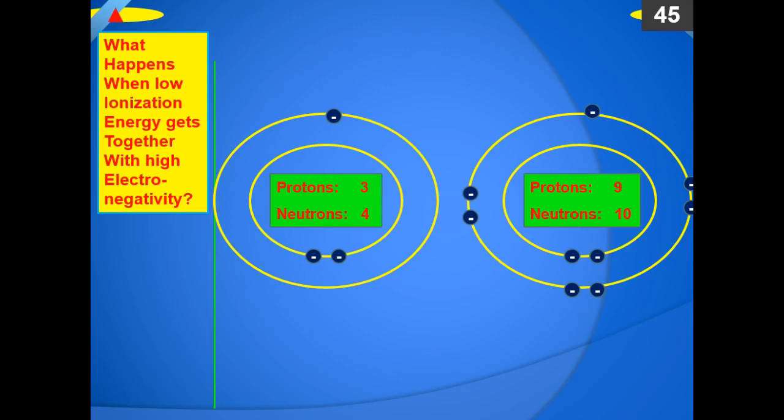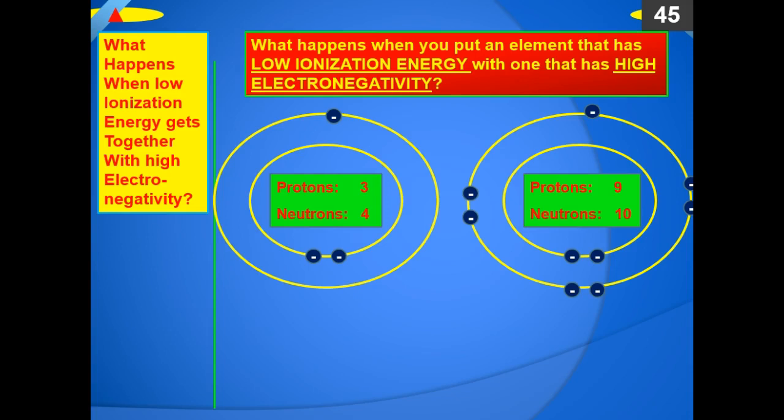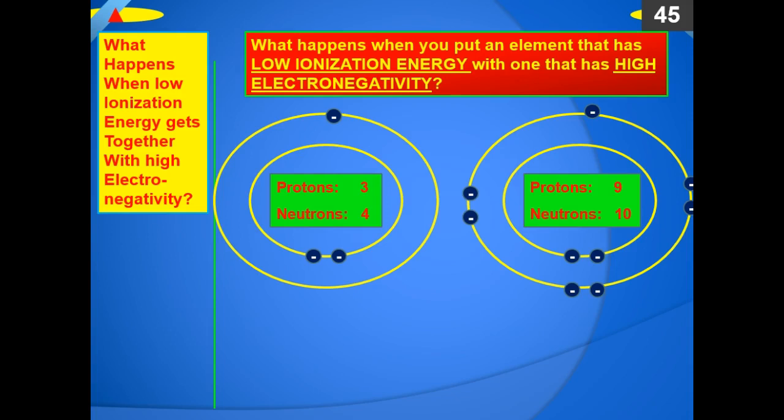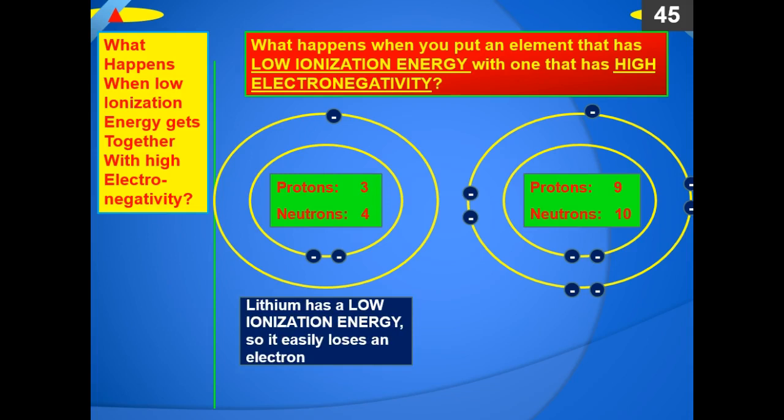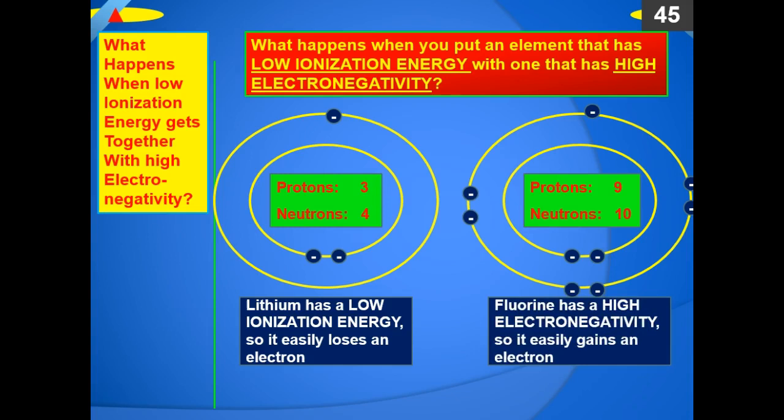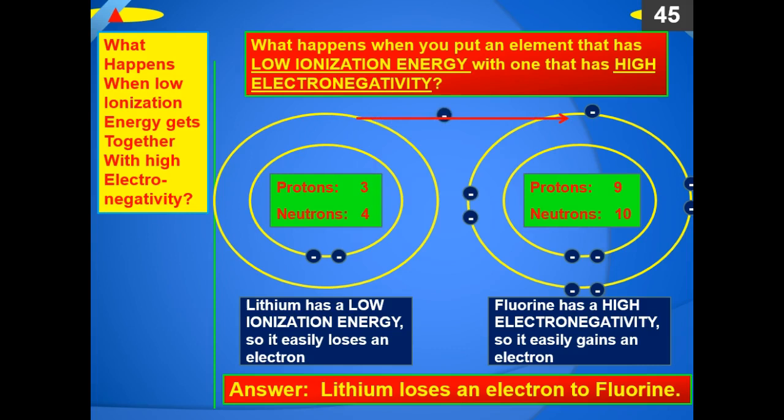What do you think is going to happen when those two get near each other? The fluorine is going to pull the electron away from the lithium. Lithium has a low ionization energy, so it easily loses an electron. Fluorine has a high electronegativity, so it easily gains electrons. The answer is that lithium loses an electron to fluorine — and there it goes in the animation, and that electron has gone over to fluorine.